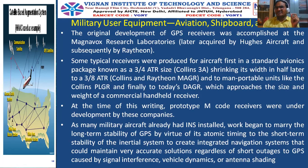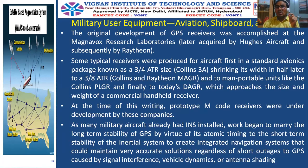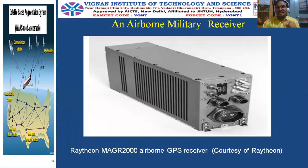INS is also installed in military aircraft because integration is required between GPS and INS. To maintain very accurate solutions, regardless of short GPS outages caused by signal interference, vehicle dynamics, or antenna shading, INS plays an active role. There must be tight integration between INS and GPS. One of the original airborne GPS receivers was produced by Raytheon under the name MAGR 2000.